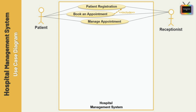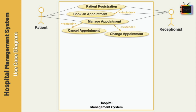Next, I am adding the 'Manage Appointment' use case. If a patient wants to cancel or change an appointment, they can use this option. We use the extend relation when a use case is optional and comes after the base use case. It is represented by a dashed arrow in the direction of the base use case with the notation 'extend'. Here, cancel and change appointment are optional.